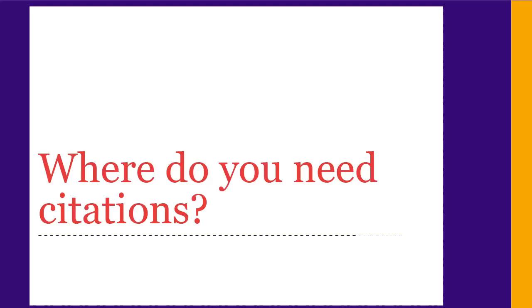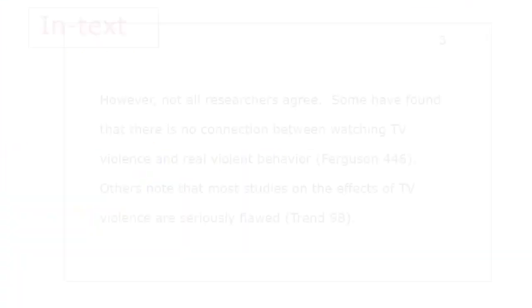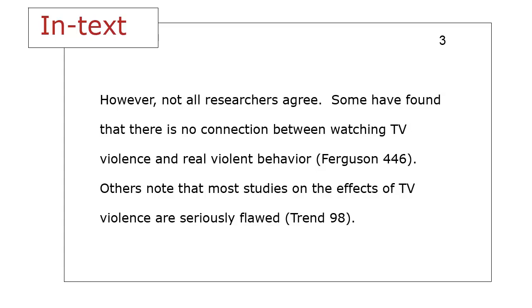First, where do you need to put citations? Citations come in two parts. The first part is in your paper, at the end of every sentence that uses ideas from a source. This lets readers know which source you used, and is called an in-text citation.